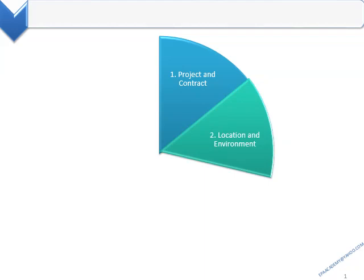The seven categories are: project and contract, location and environment, project team, owner, contractor, and architect.